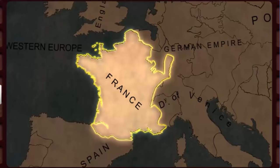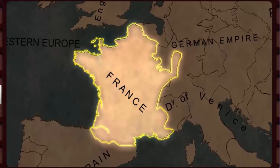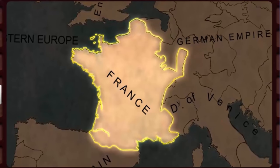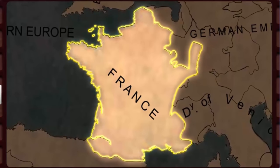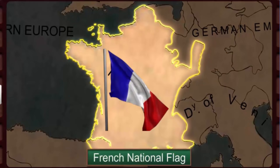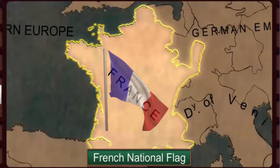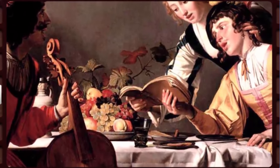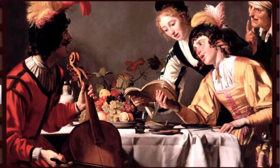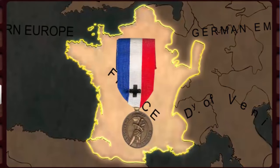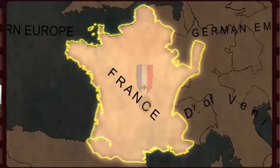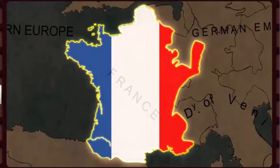Some major steps were taken by the revolutionaries to establish a feeling of nationhood and a collective French identity. To commemorate this significant historical event, a new design for the French national flag was adopted. The new design represented the pride and honor of belonging to a free nation. To invoke nationalism, several hymns and songs were composed and oaths were taken. The martyrs of the French Revolution were commemorated. French was adopted as the common language of France and the use of regional dialects was discouraged.